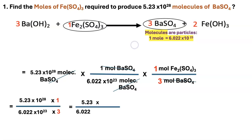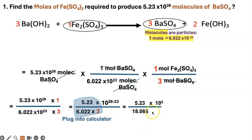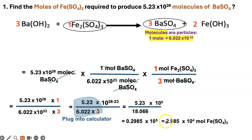Fish out the remaining values from the top and bottom. Multiply the values on top, and subtract exponents: 10²⁸ minus 10²³ gives 10⁵. Multiplying the coefficients gives 18.066, then divide. You can leave it in that form or write it in scientific notation. This is your final answer.